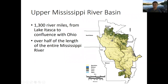The upper Mississippi River Basin — the river runs about 1,300 miles down through this basin until it meets the Ohio River, and then from there it goes on to its next sub-watershed. It's a very significant part of the river in terms of river miles — it's over half the length of the entire Mississippi. There are all these other rivers that feed in as tributaries, but if you just followed what we call the Mississippi River, over half of the river's length is in our basin.